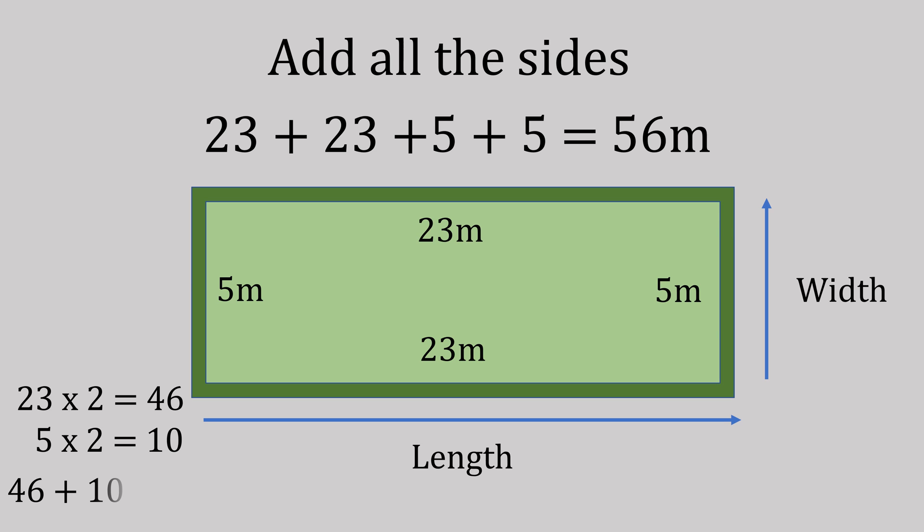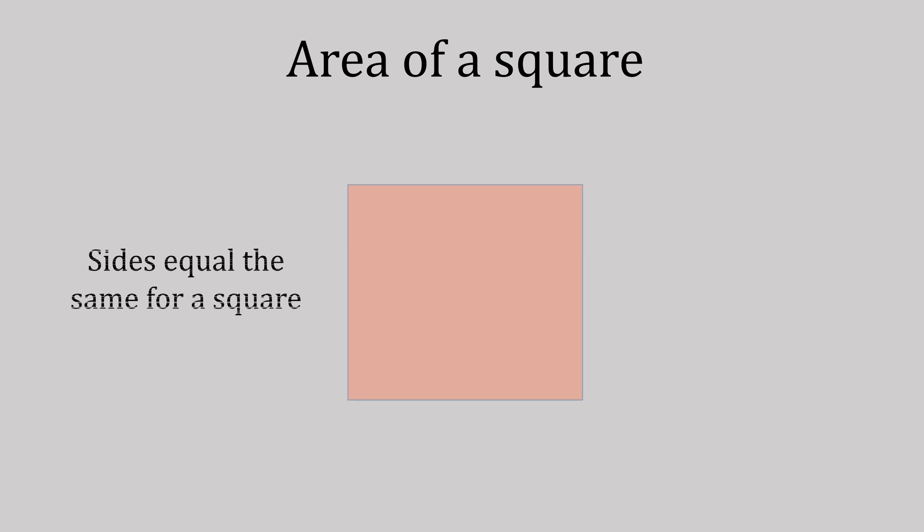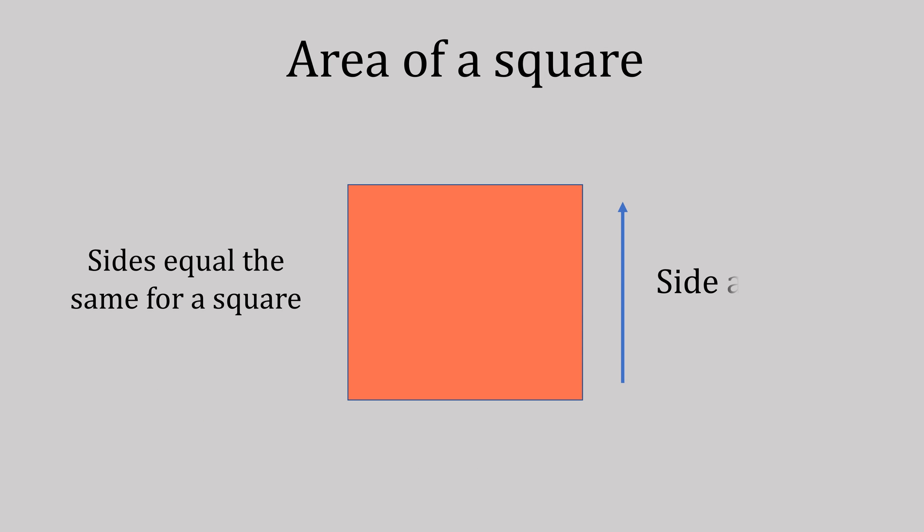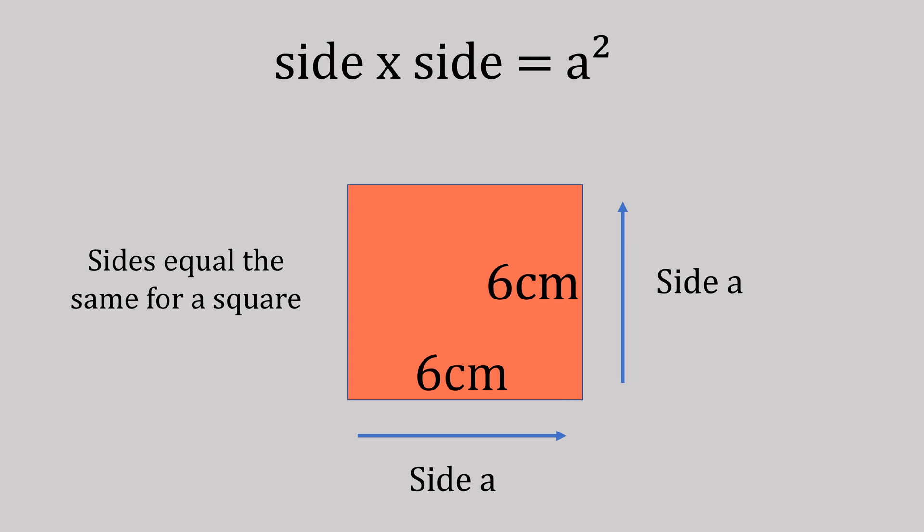So for an area of the square, it's the same formula as a rectangle, but obviously the sides are equal. So we would call the sides both a, so it's side times side would give us a squared. So for this it's 6 times 6 is 36, and not forgetting centimeter squared.